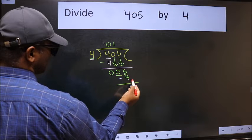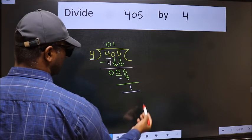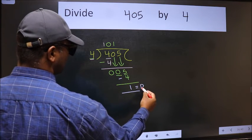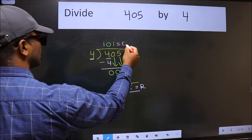No more numbers to bring down, so we stop here. This is our remainder and this is our quotient.